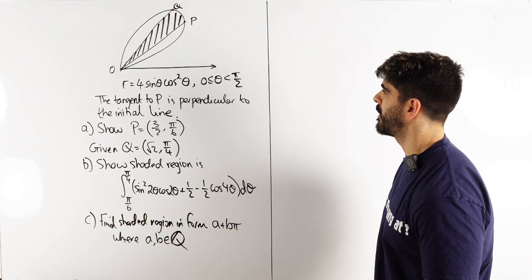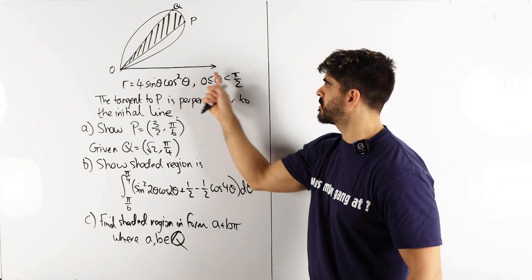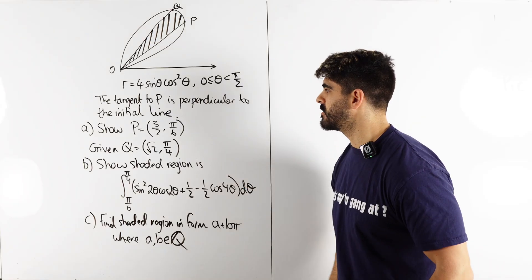Theta is between zero and pi over two. It says the tangent to p is perpendicular to the initial line which is this one. Show that p has these coordinates.